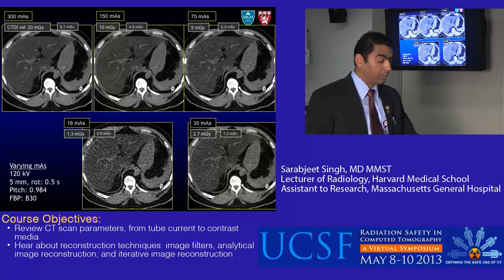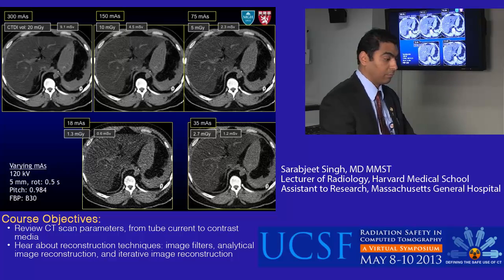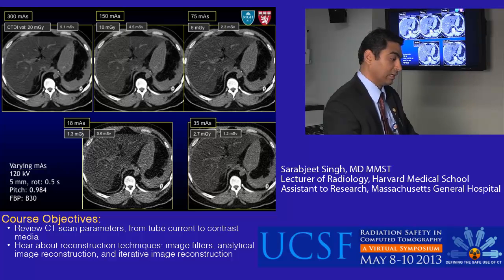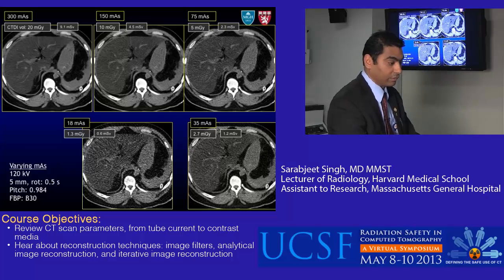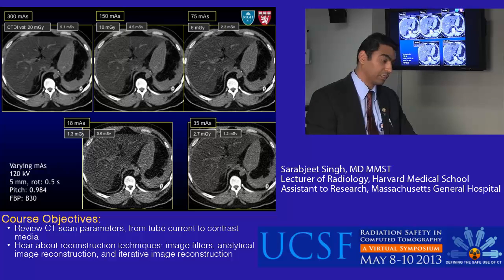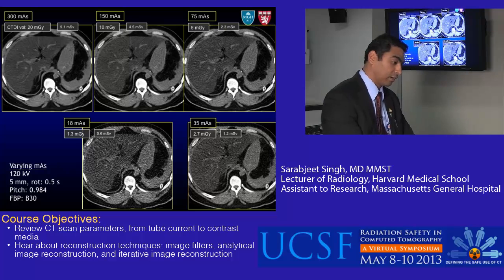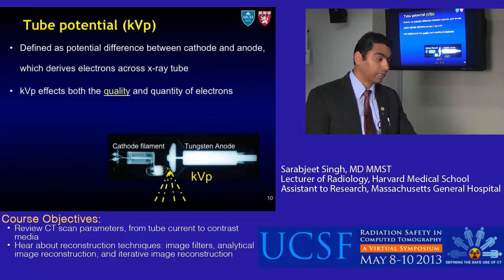Knowing mA is very important because as we lower mA, image noise increases and dose falls down linearly. For example, if we drop from 150 to 75 mA, the image noise goes up. When we lower mA, the quantity of electrons from the tube decreases, and so does the number of photons — that's why we have higher noise in the image.